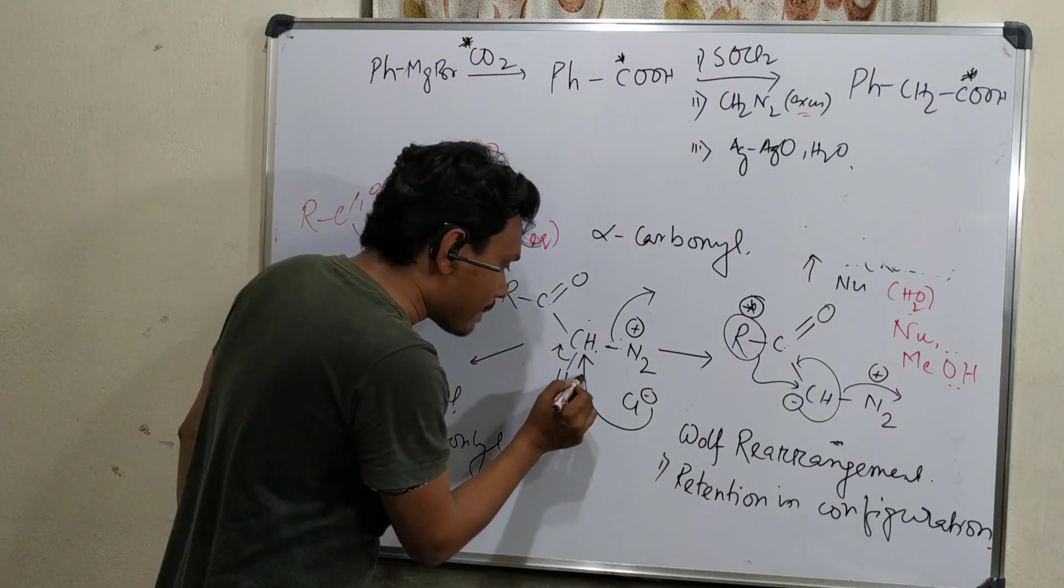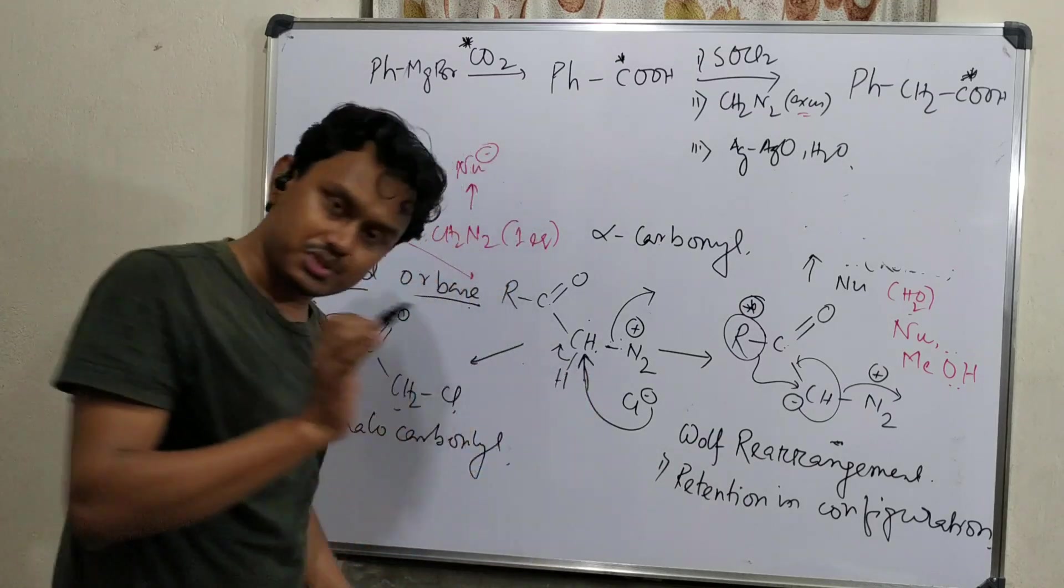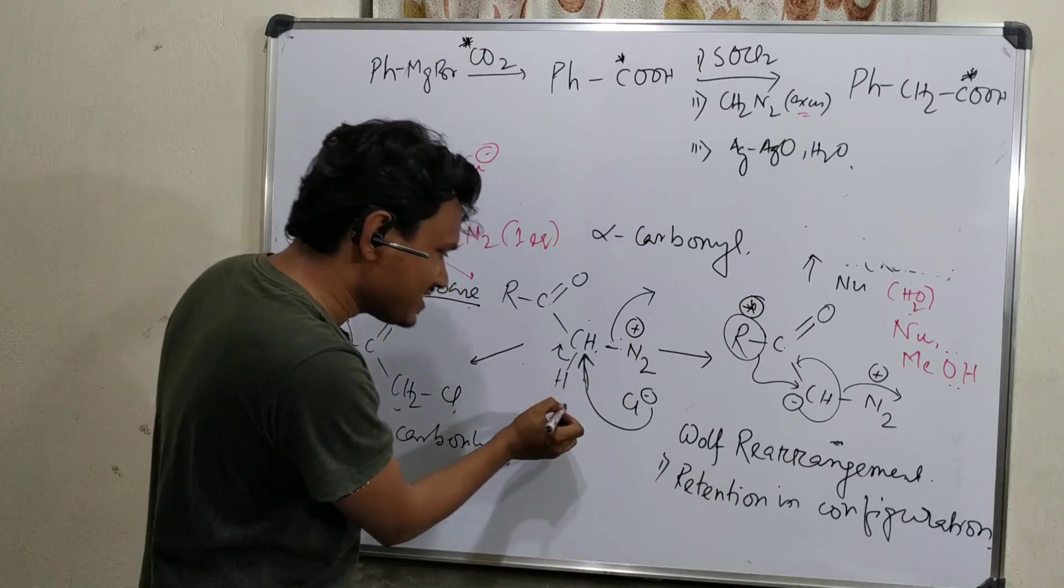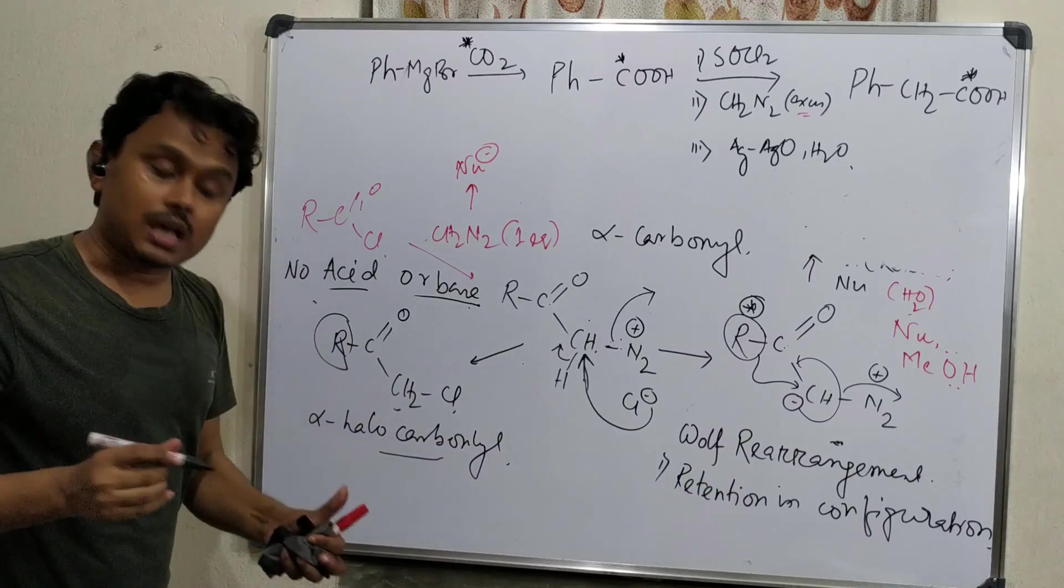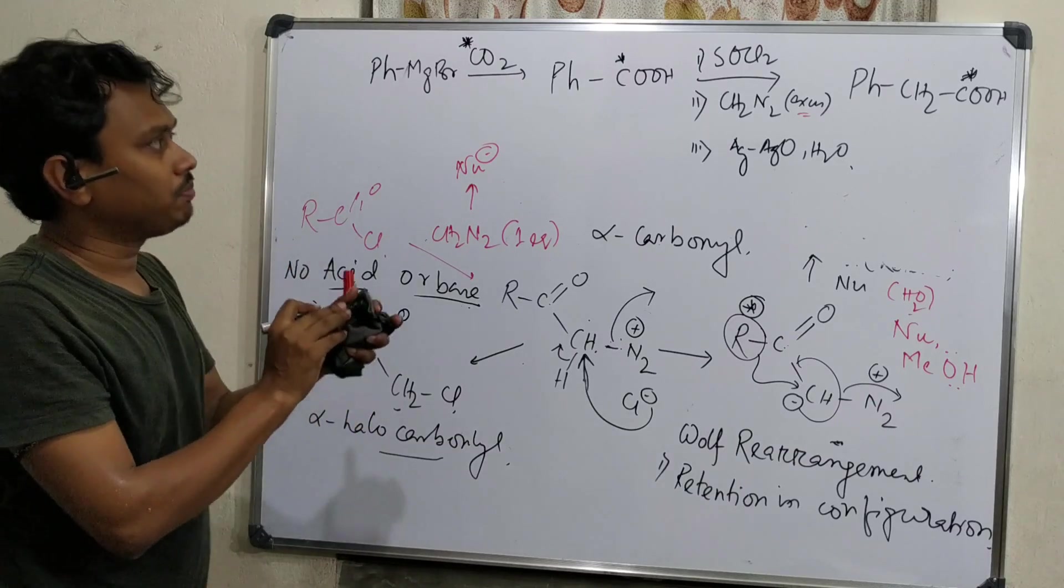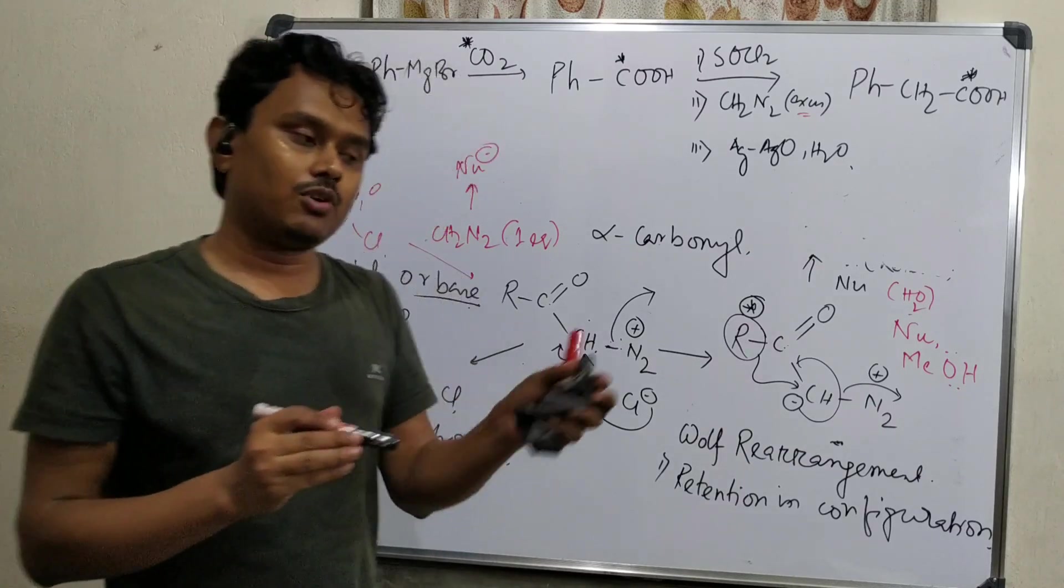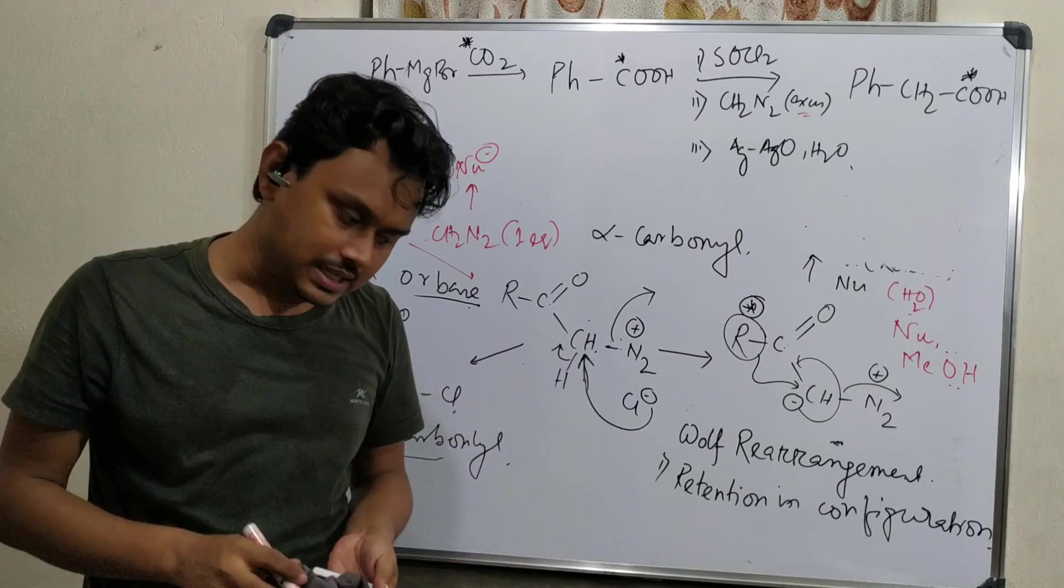This is another application of this Arndt-Eistert reaction. This is the branch of this reaction, so we can have an alpha-haloketone. These are the important points or summary about Arndt-Eistert reaction which I have explained here. I guess it is helpful for you.